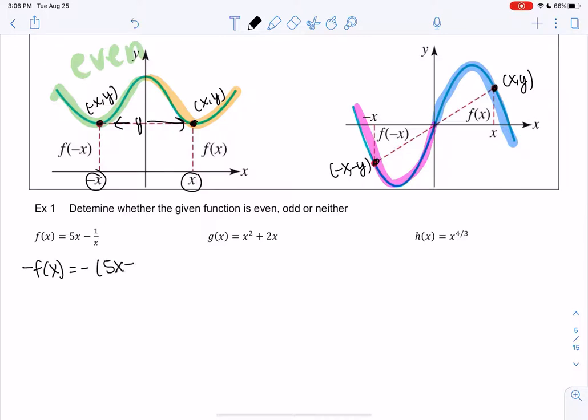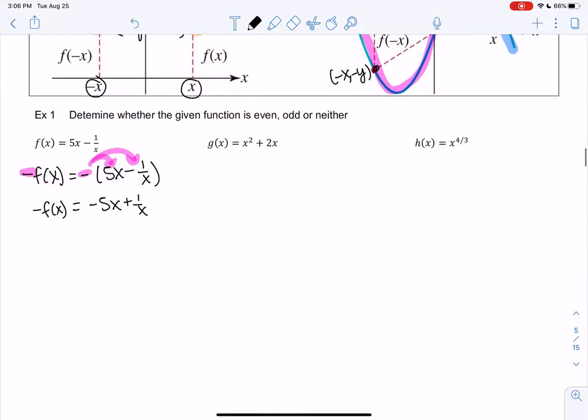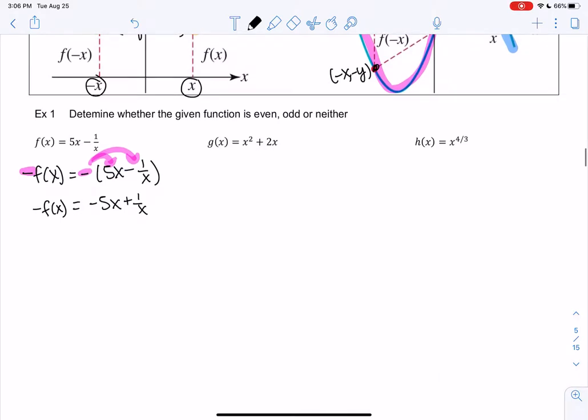So if I make the function negative, what happens? And then I'll compare that. So I get negative 5x plus 1 over x. And then let's see what happens when I plug in negative x instead. So we're basically comparing what happens to the negative on the inside versus the outside.